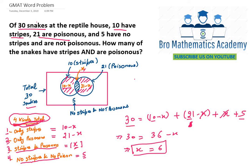If we were asked to find other values: only stripes would be 4, only poisonous would be 15, stripes and poison is 6, and no stripes and no poison we already know is 5. Thank you so much for watching, and if you like please subscribe to my channel for more such videos on GMAT. Thank you, happy learning!